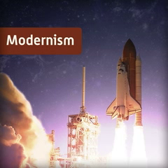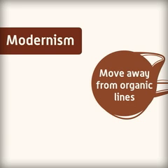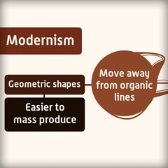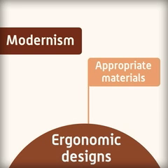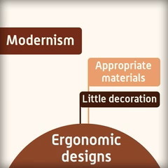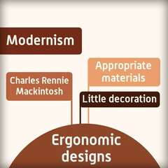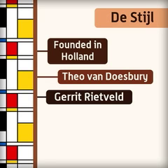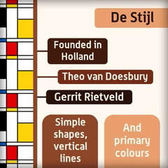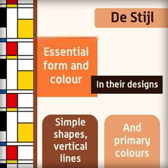Modernism refers to when designers started to move away from organic lines and began to use geometric shapes that were easier to mass produce. The ergonomic designs were made using appropriate materials and very little decoration, made famous by designers such as Charles Rennie Mackintosh. The style was founded in Holland by a group of painters and architects including Theo van Doesburg and Gerrit Rietveld. The designs were basic, using simple shapes, vertical lines and primary colours, producing a range of furniture and architecture that use only essential form and colour.